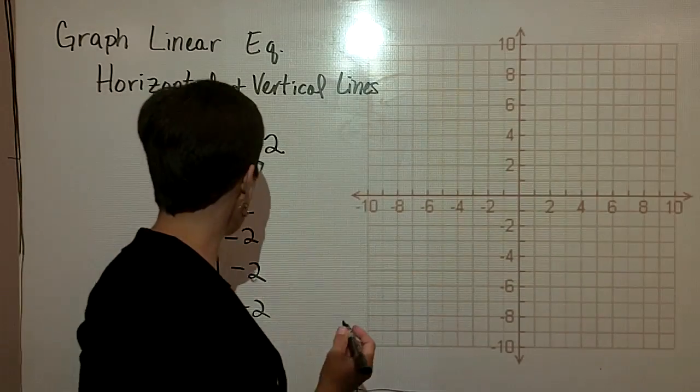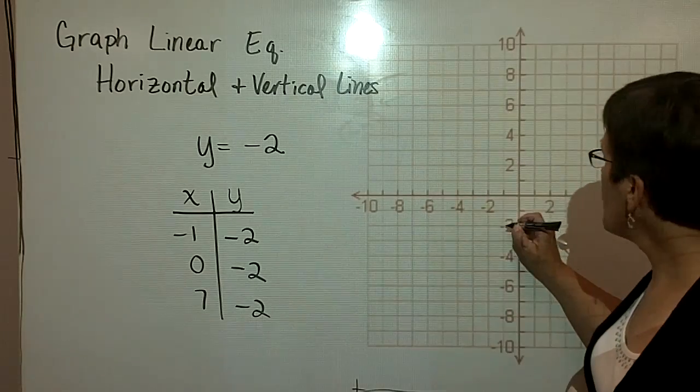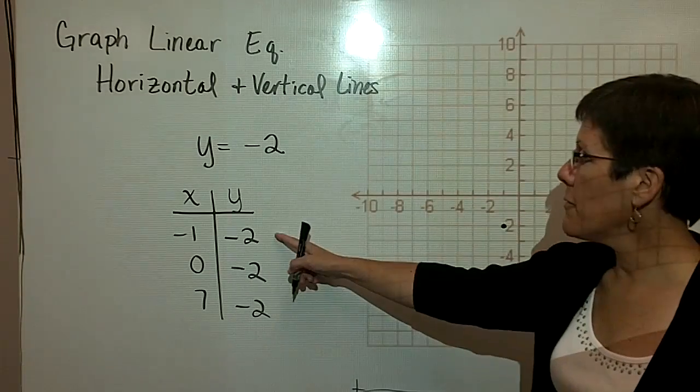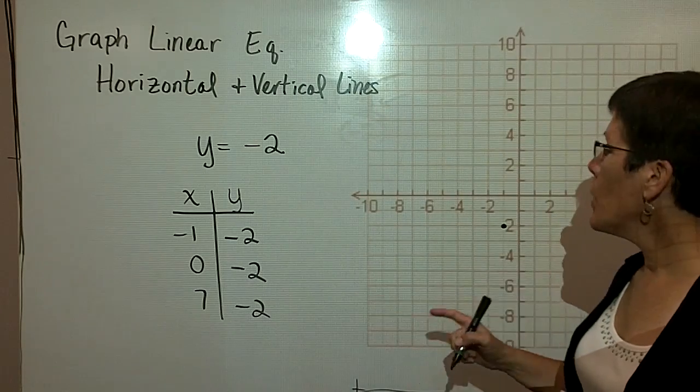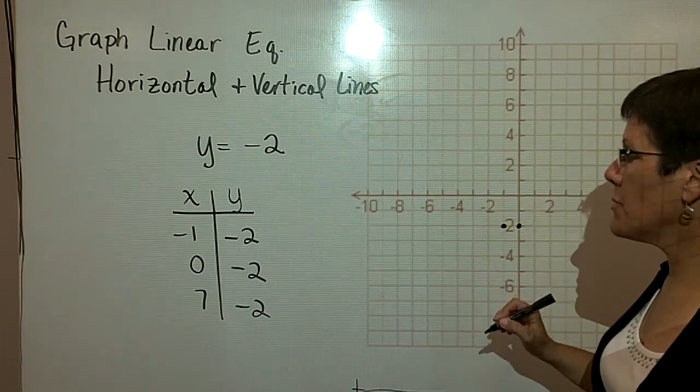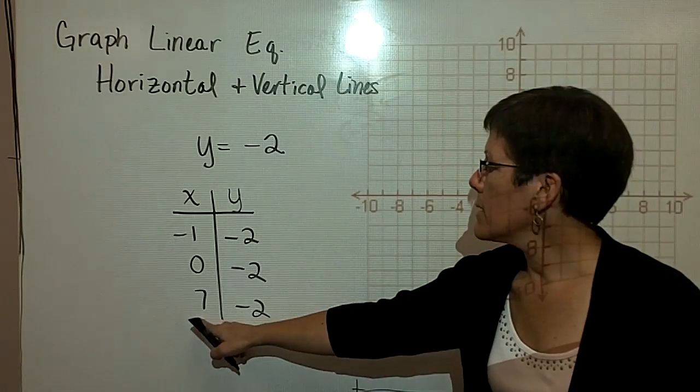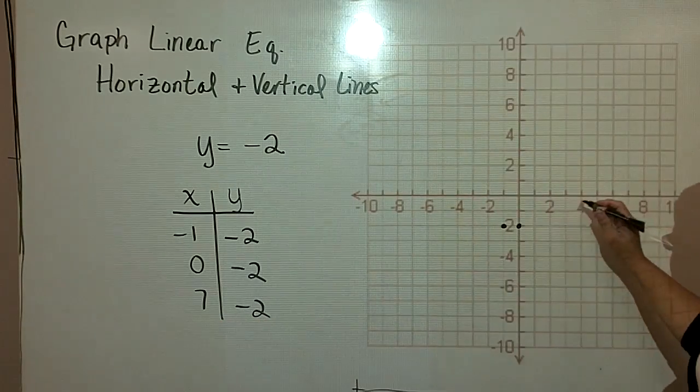I can plot those ordered pairs now. So when x is negative 1, y is negative 2. That's my first ordered pair. When x is 0, y is negative 2. And when x is 7, y is negative 2.